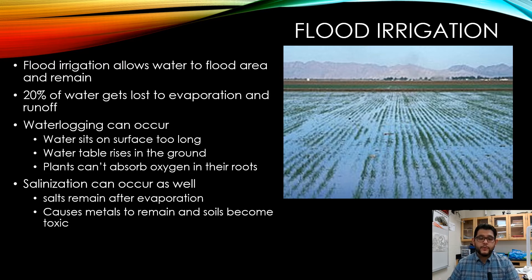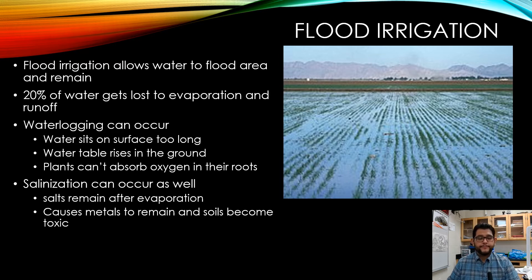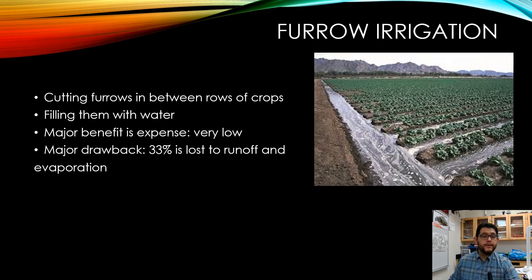Another problem with flood irrigation is salinization — an issue where salts attach to the water and accumulate in the soil, along with toxic metals. This leads to root death and poor plant performance. So there are clear benefits and drawbacks to flood irrigation.